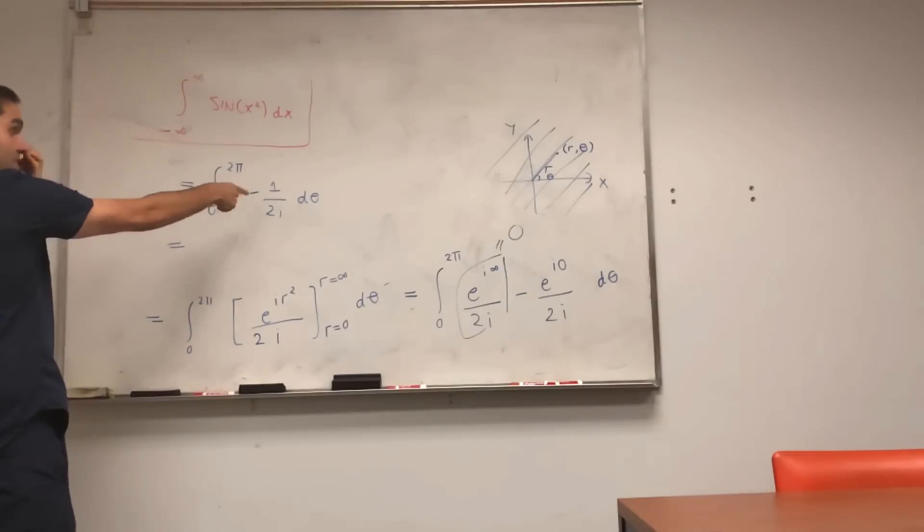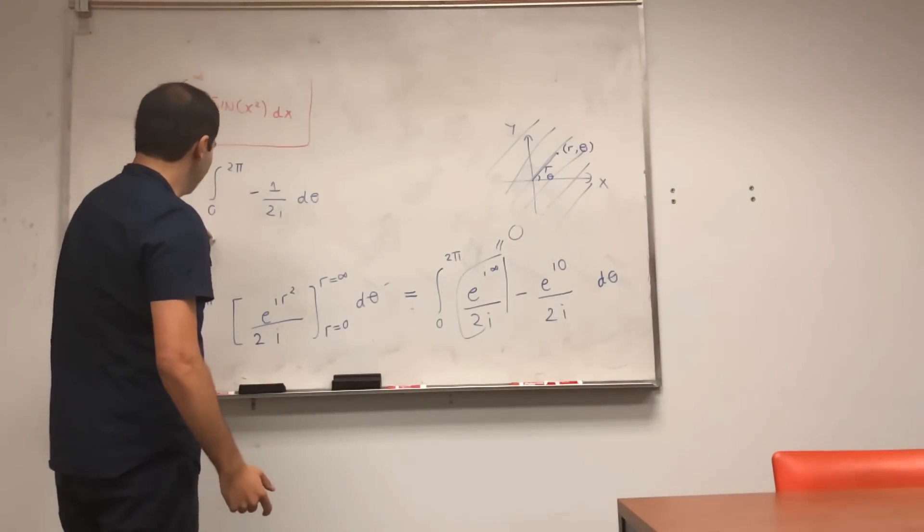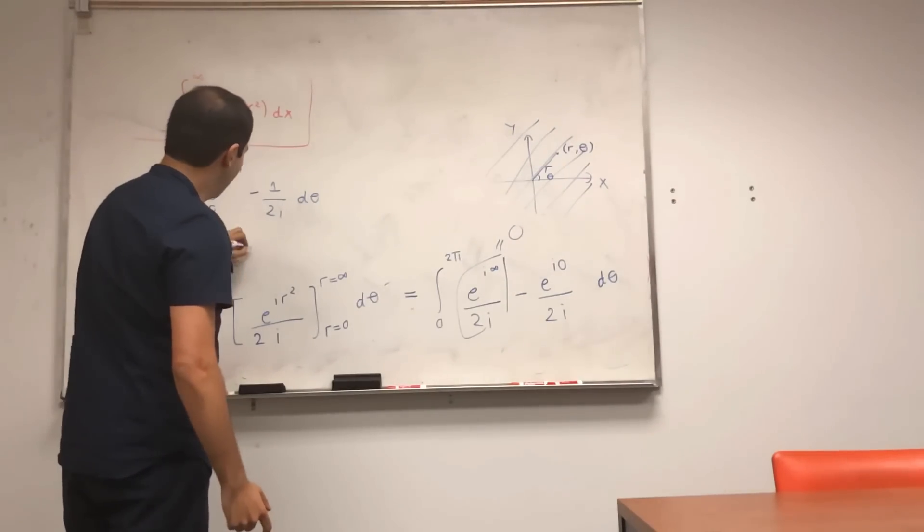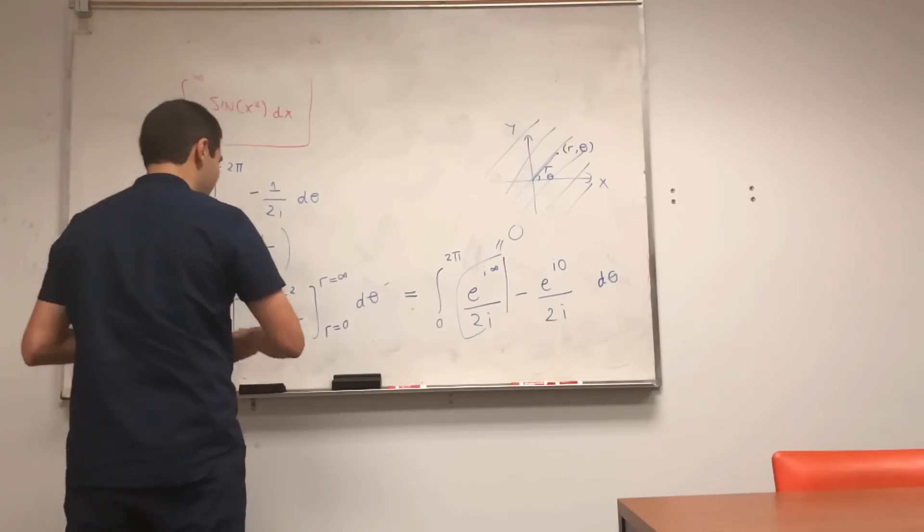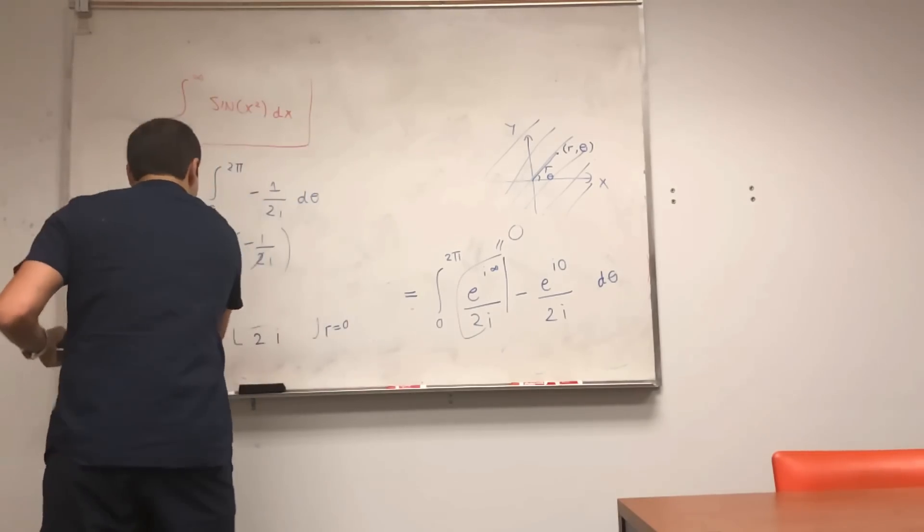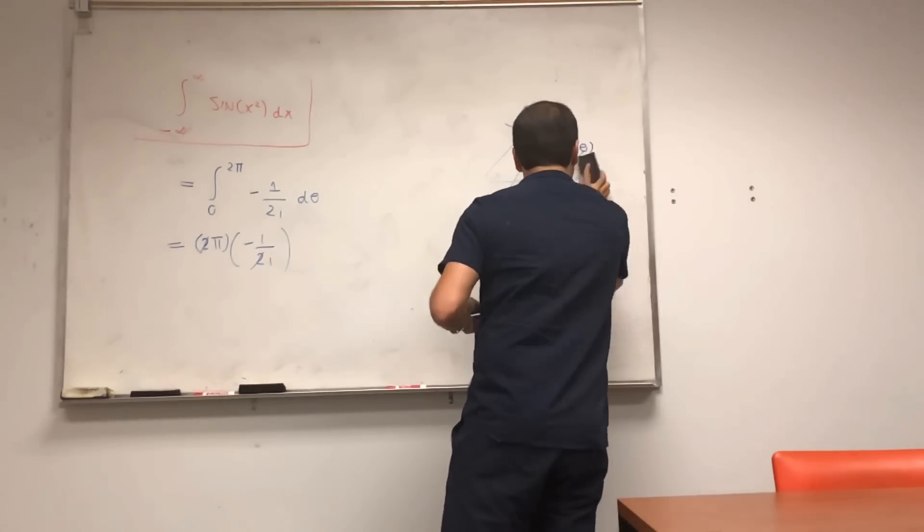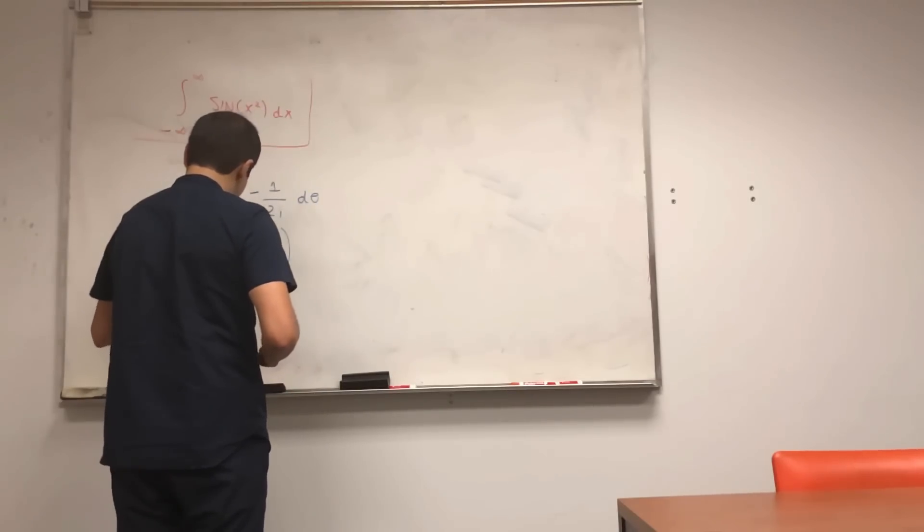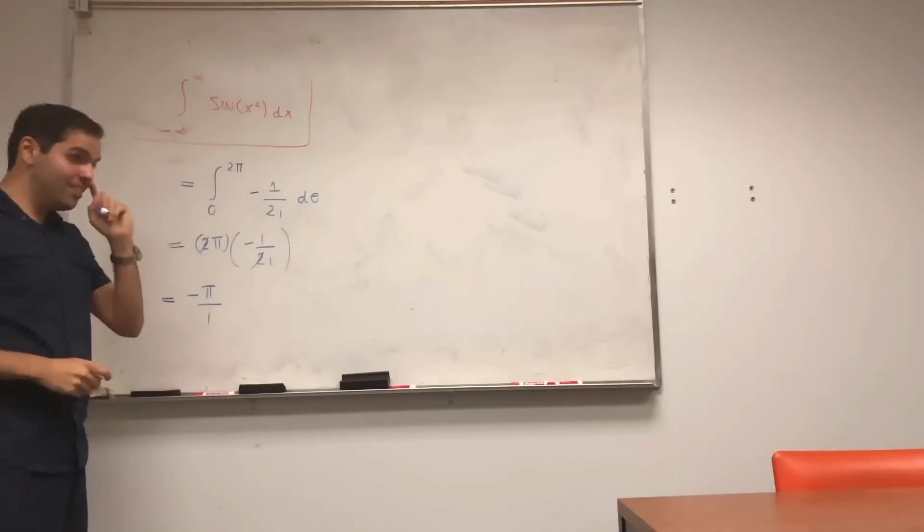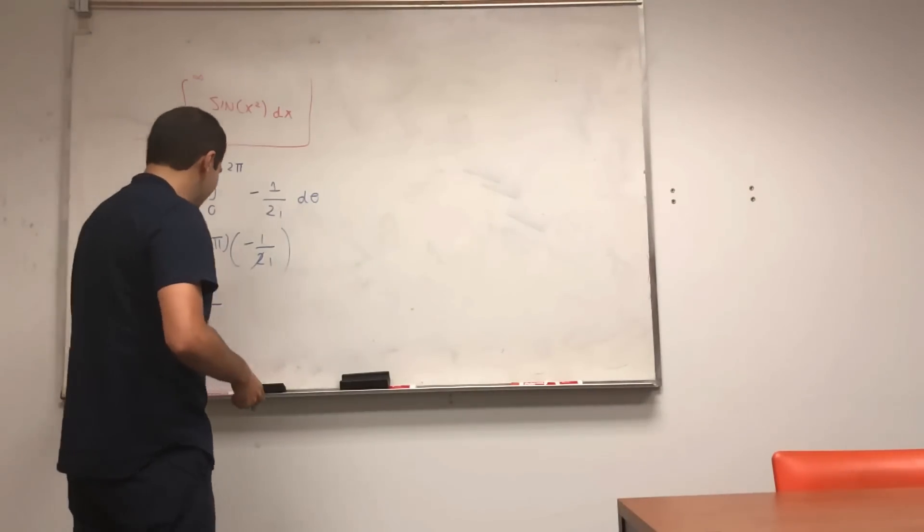And so, in the end, this integral then becomes, again, this is very embarrassing for me as a mathematician, but let's just continue that way. Integral from zero to two pi of e to the i zero, which is one, and so we get minus one over two i, d theta.